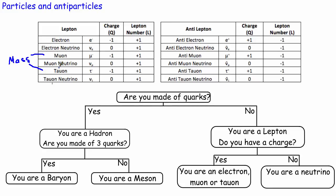There are another three leptons: the neutrinos. These are split into three — an electron neutrino, a muon neutrino, and a tau neutrino. Often when you get a decay involving an electron it's accompanied by an electron neutrino. The electron, muon, and tau all have a charge of minus one. They have a baryon number of zero but a lepton number of plus one. Neutrinos have no charge whatsoever but also have a lepton number of plus one.